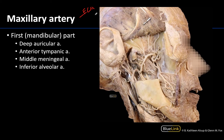The maxillary artery is divided into three parts based on its relationship with the lateral pterygoid muscle, specifically the inferior head of the lateral pterygoid muscle. The first or mandibular part will be deep to the mandible and posterior to the lateral pterygoid. The second part, or pterygoid part, is adjacent to the lateral pterygoid muscle — either superficial, as it is here, or deep to it. The third or pterygopalatine part will be anteromedial to the lateral pterygoid.